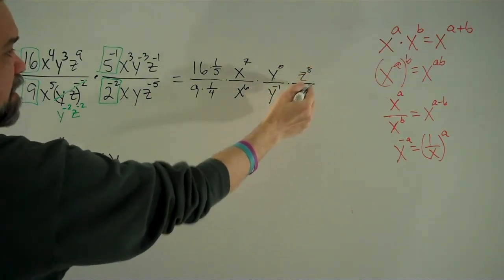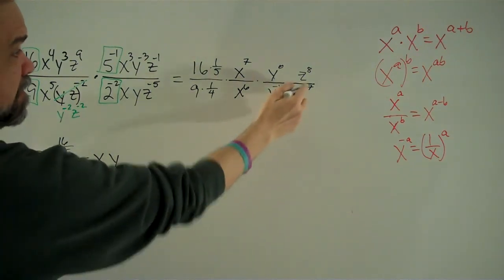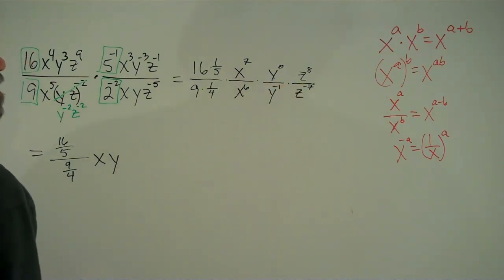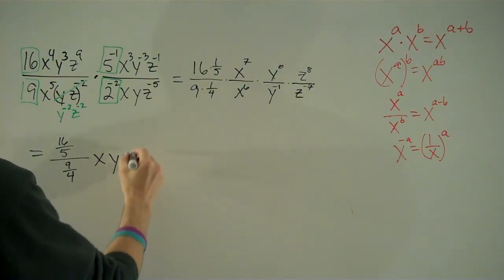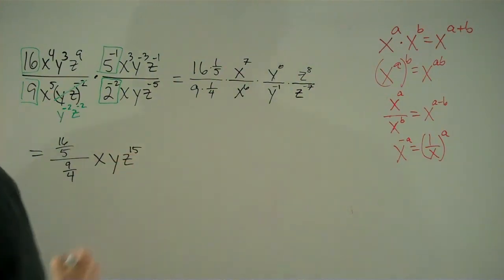z to the 8 divided by z to the negative 7th is z to the 8 minus negative 7. That's z to the 8 plus 7. 8 plus 7 is 15. So this is simplifying very nicely.